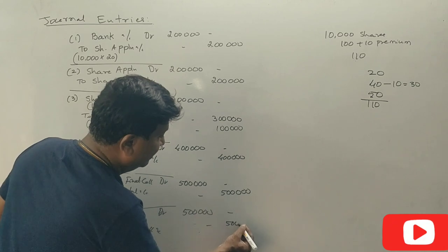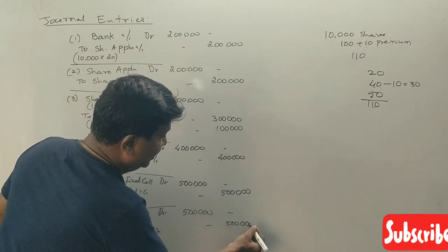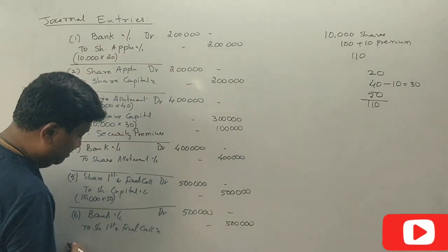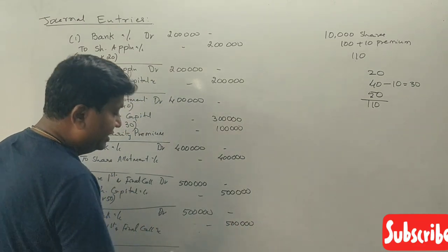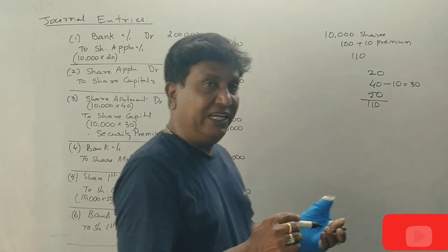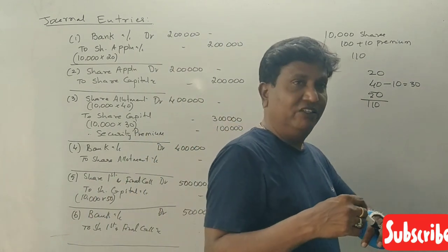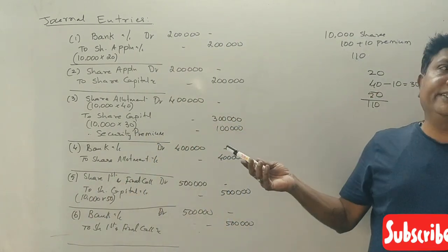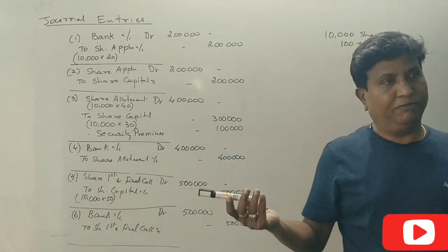Narration: share first and final call money received. That's all. This completes the full set of journal entries, worth six marks.